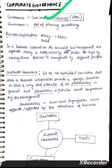In a business corporation, the ownership and management are separate. Money is mostly risked by the public at large by issuing shares. The business is managed by different people. So why do we need corporate governance?